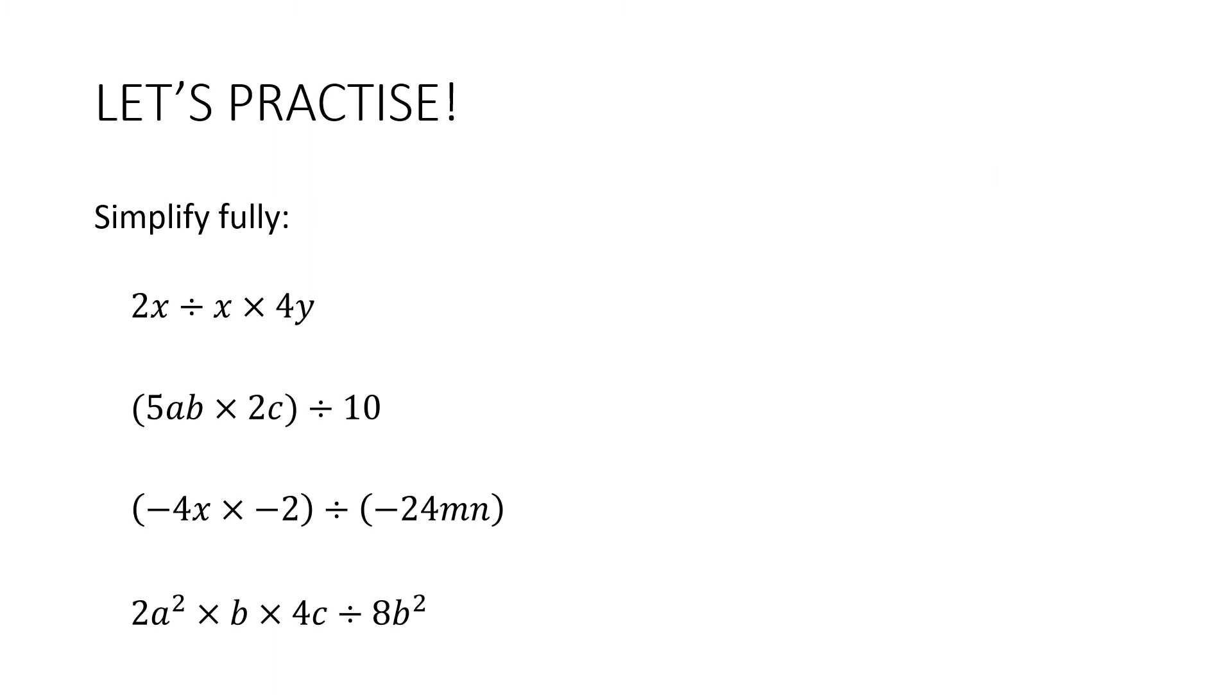So let's have a look at the first one. So we're going to do the division and multiplication in order. So we're going to start with doing 2x divided by x. So we can see there that the x's are going to cancel. And I'm going to be left with 2 times 4, which is 8y.